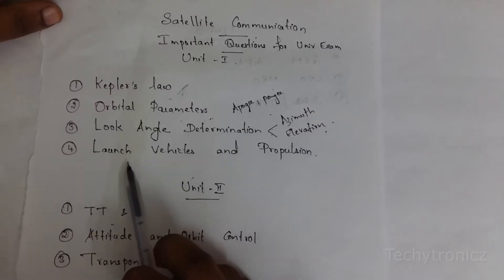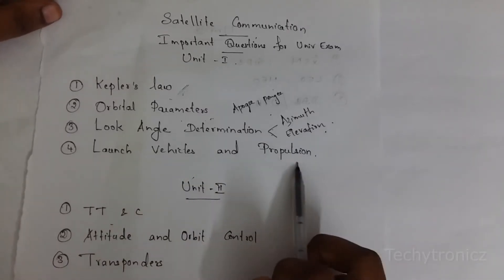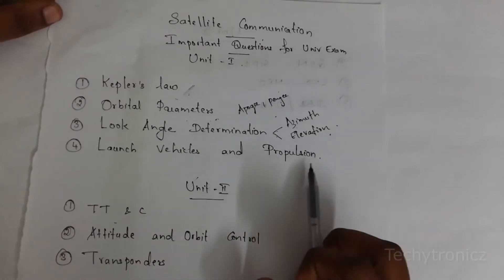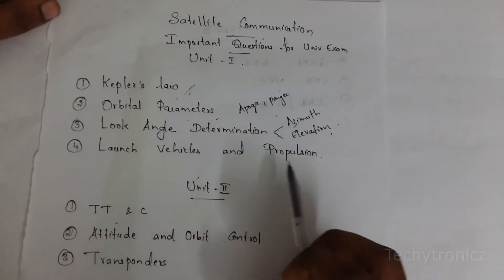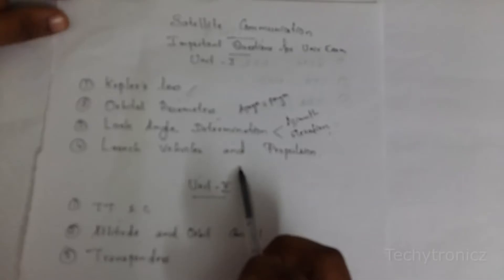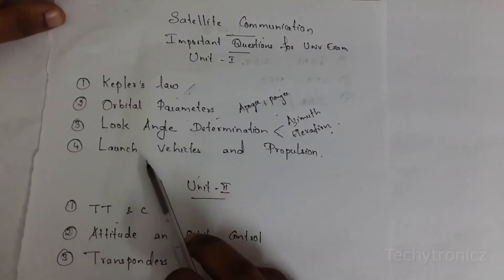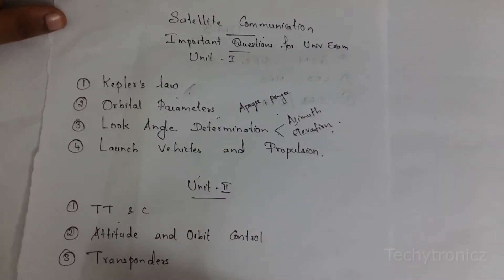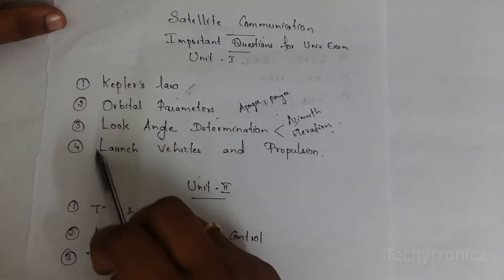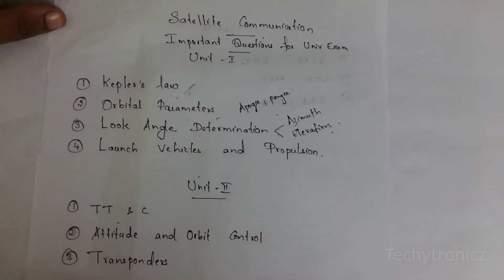The next important question is launch vehicles and propulsion — how to launch vehicles and about propellant. You are having some diagrams; by drawing the diagrams you have to explain about launch vehicles and propulsion. If you learn these 4 questions in unit 1 you can attend any one question.